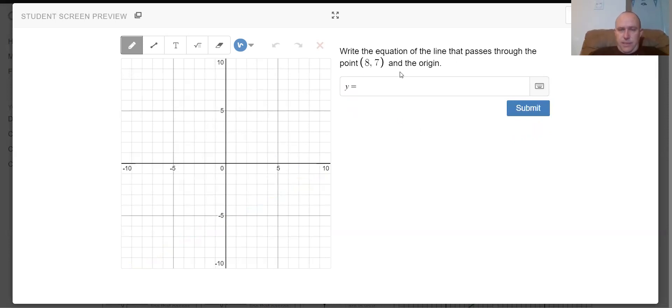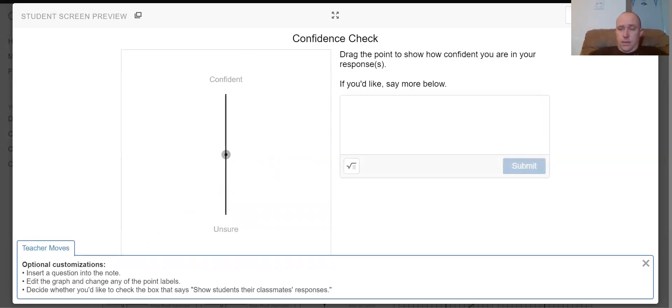Write the equation of the line that passes through the point eight seven and the origin. Well we already know the y intercept for this one straight away because it's zero. So I'm just counting squares. So I'm going up seven and across eight. So this is y equals seven over eight x. And it already says I'm right. I don't need to put the plus zero.